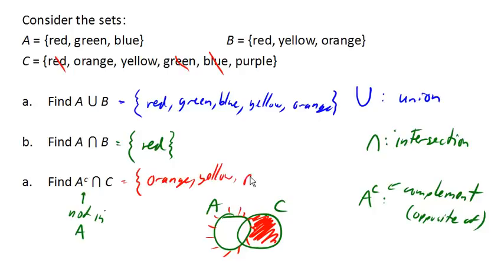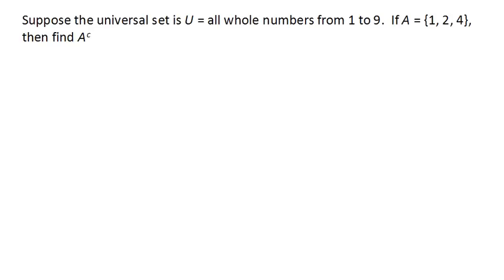Now, as I mentioned, sometimes we have a universal set defined. So in this case, the universal set, in other words, everything that we're talking about is the set of numbers from 1 to 9. In that case, we can talk about the complement all by itself. So if A is the set 1, 2, 4, then A complement would be everything that's in the universal set that's not in set A. And so that would be the numbers 3, 5, 6, 7, 8, and 9. That's everything that's not in A, but that is part of the universal set.